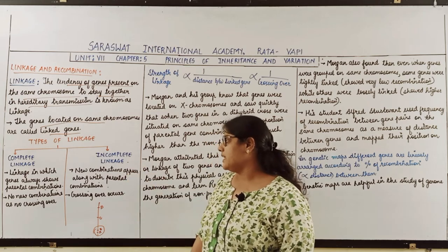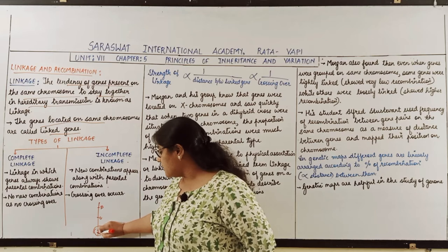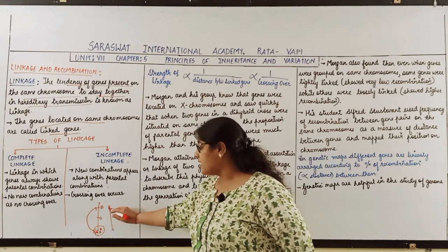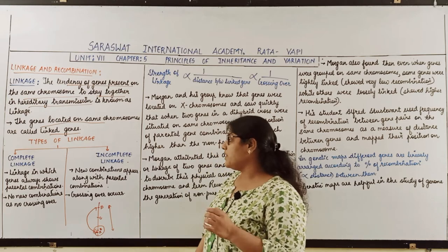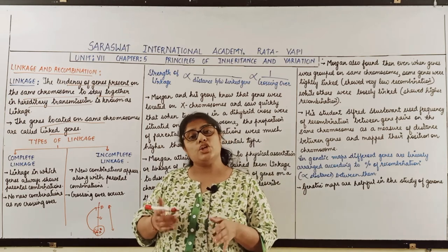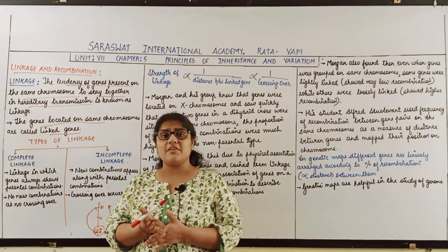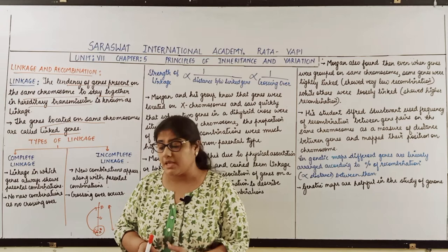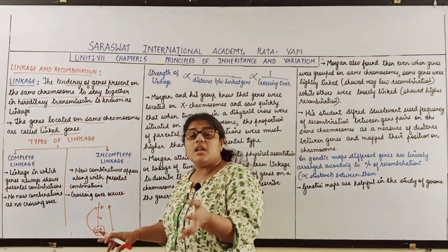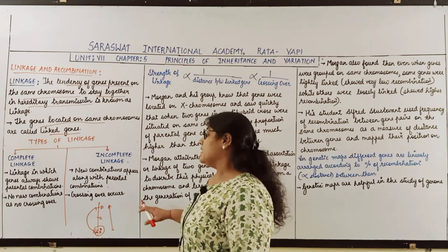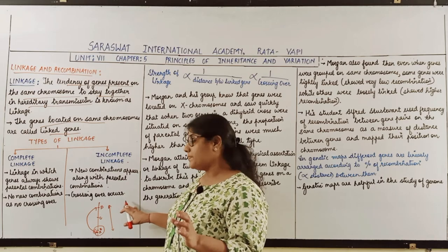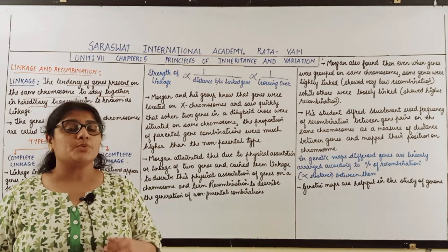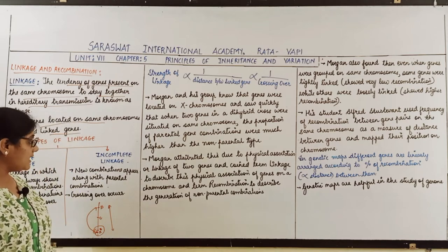In incomplete linkage, consider genes A and D, which are located far away from each other. During their inheritance, a chiasma is formed and new combinations apart from the parental combinations are formed. New combinations appear along with parental combinations — that is, crossing over and exchange of genes takes place. Such linkage is called incomplete linkage.